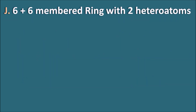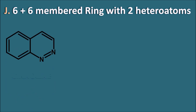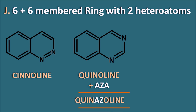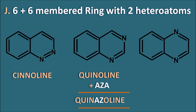Now, 6+6-membered ring systems with two heteroatoms. When nitrogens are at the first and second positions, this ring is commonly known as cinnoline. When nitrogens are at the first and third positions, the name is derived from quinoline: quinoline + extra nitrogen as 'aza' gives quinazoline. When nitrogens are at the first and fourth positions, it is commonly known as quinoxaline — do not think the 'ox' indicates oxygen is present. These rings are well known by their common names and must be remembered as such.